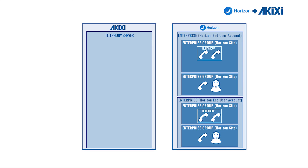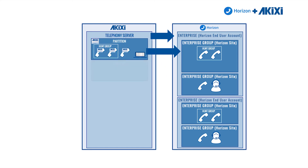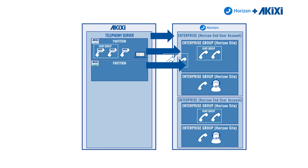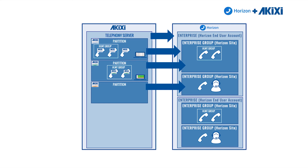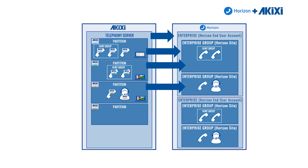Let's quickly build our Akixi instance. We're going to connect the first partition at enterprise level to the very top enterprise and synchronize, bringing everything across. Then the second partition at enterprise group level, followed by another partition at enterprise group level into the second enterprise group, synchronizing and bringing everything across.